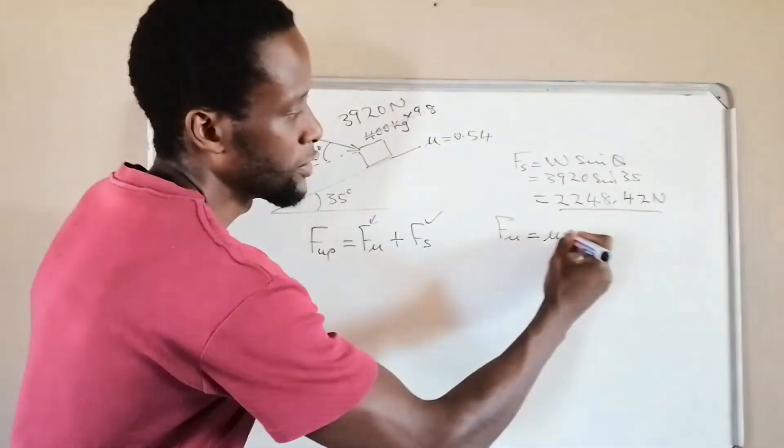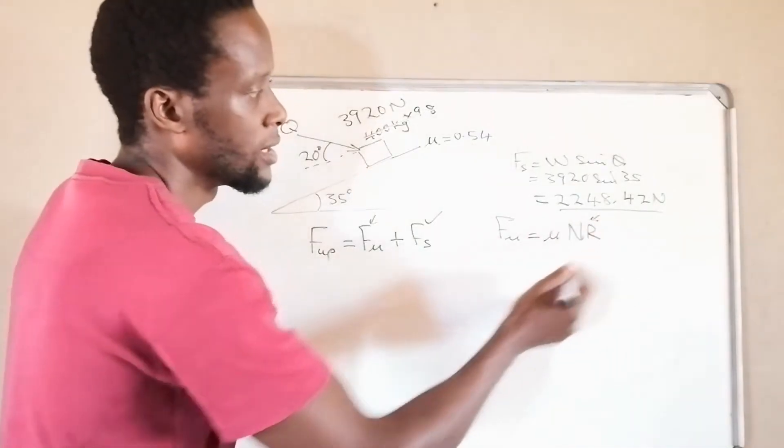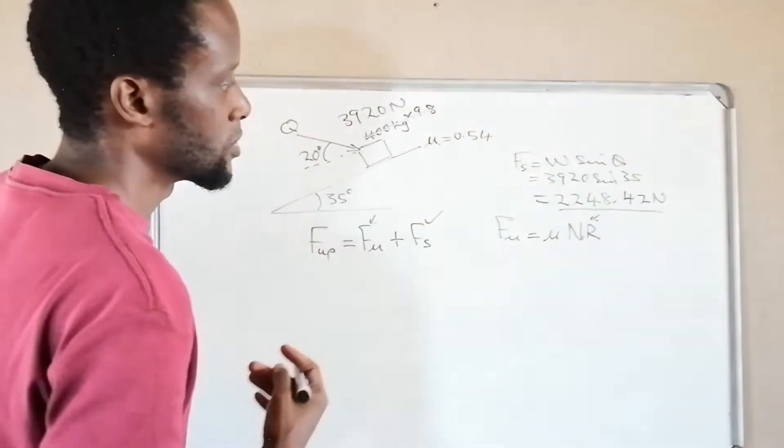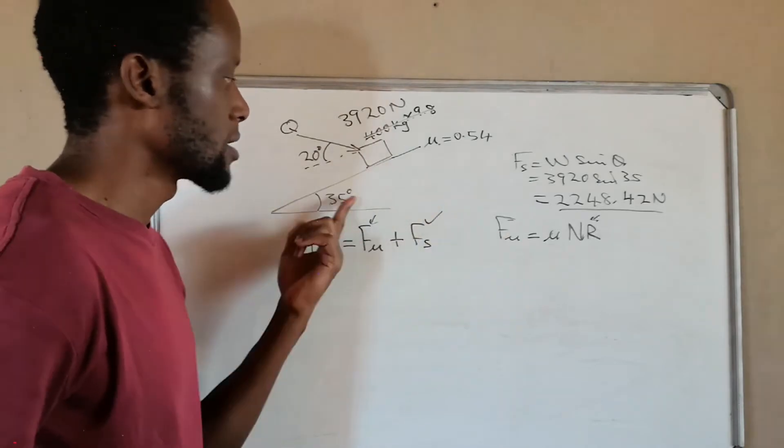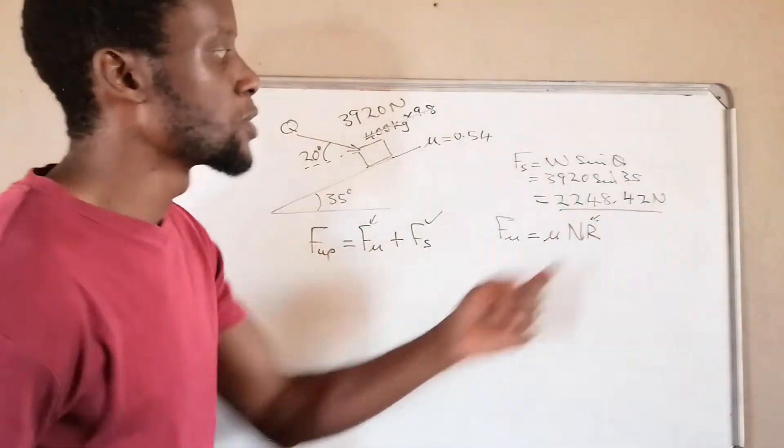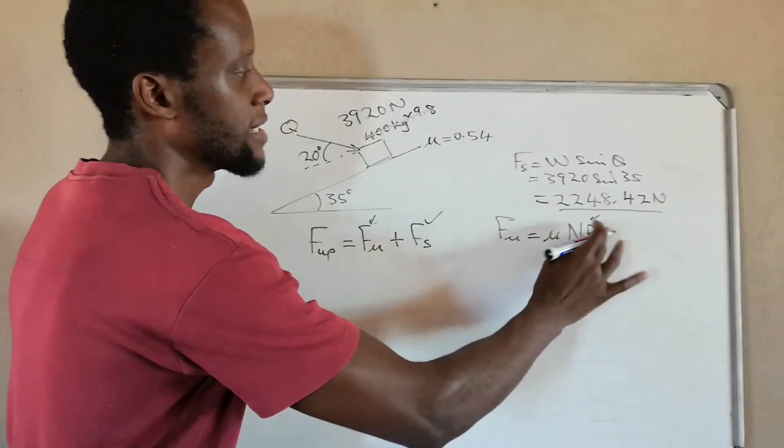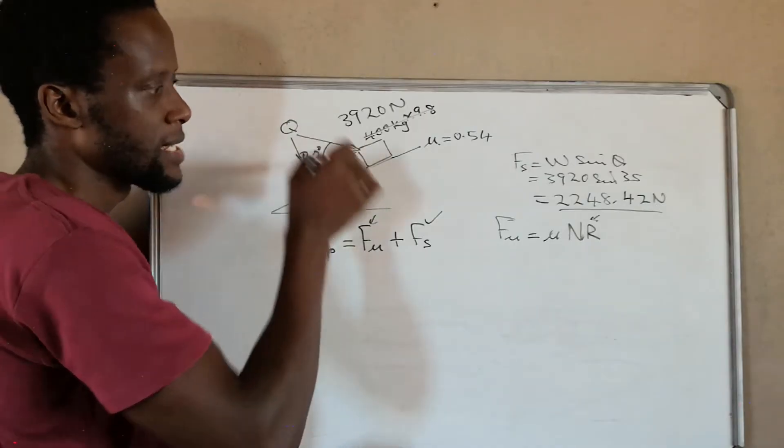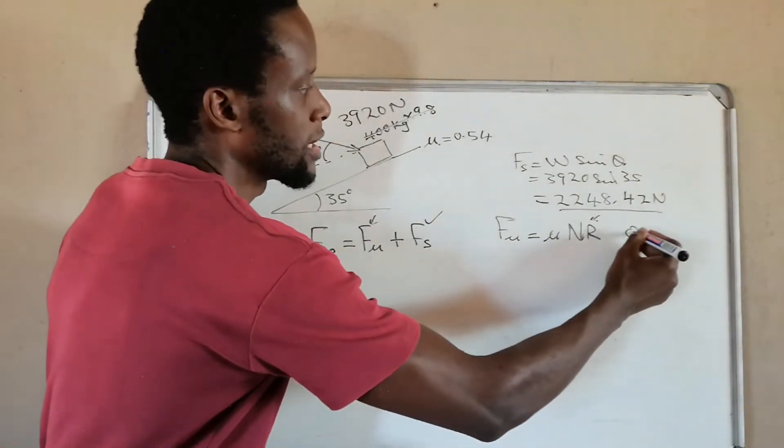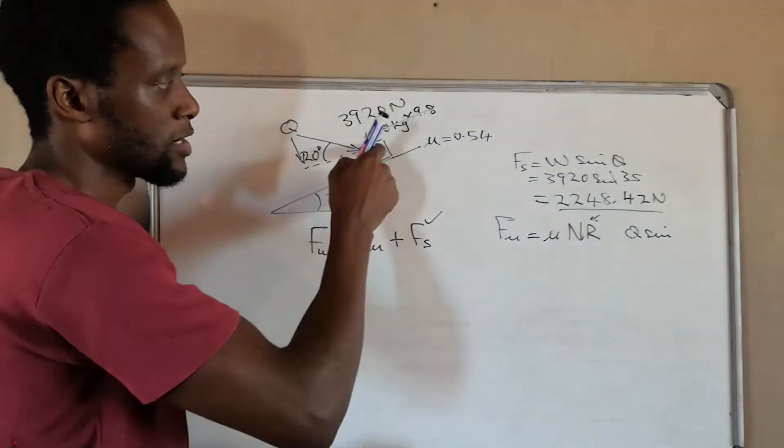Then with this one now it becomes a bit of a challenge because friction force is equals to the coefficient of friction times the normal reaction. Now remember what we said, this normal reaction now it also poses another challenge to say it is not just equals to the weight cos the angle of the incline, it is also being minus this normal reaction, it is being, sorry not minus, it is being added to this force because the component of this is being added. So we'll say q sine the perpendicular component of this to the surface sine 20.